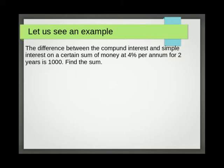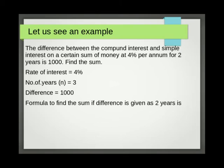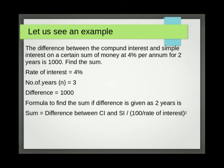The difference between the compound interest and simple interest on a certain sum of money at 4% per annum for two years is 1000. Find the sum. Given: Rate of interest = 4%, number of years (n) = 3, Difference = 1000. Formula to find the sum if difference is given for two years is: